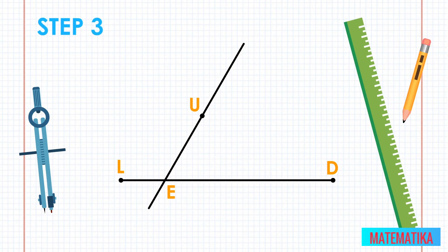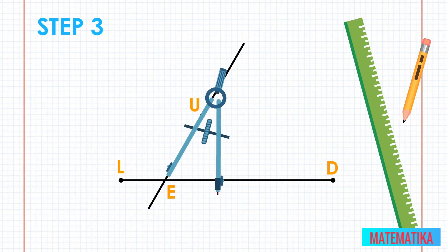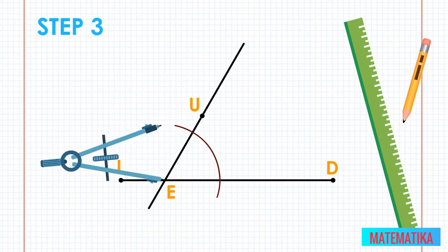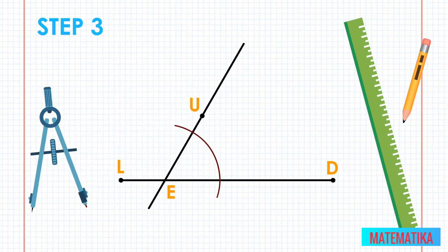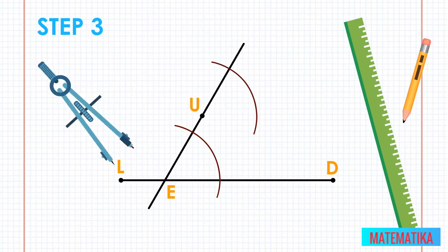Step 3: Use your compass to scribe an arc — an arc is a section of a circle. Open the compass legs so they are more than half the distance from the two points on your transverse. In our example, the compass is spread slightly more than halfway between point U and point E. Put the point of the compass on point E and scribe an arc that goes through the transverse line and the horizontal line — lines UE and LD. Keep the compass legs the same distance apart and repeat the arc with the compass's sharp point on point U. Scribe another arc to look similar to the one you just drew.